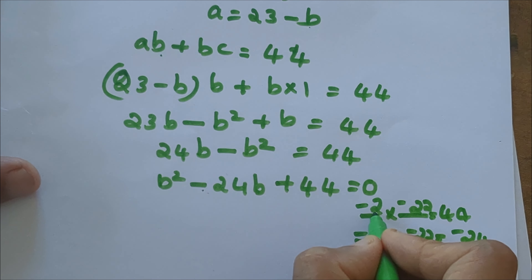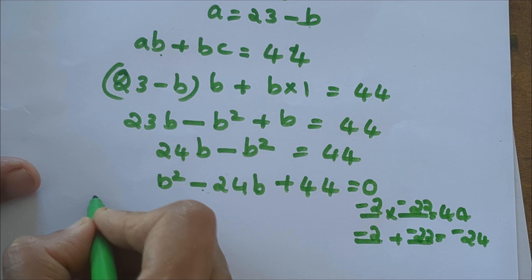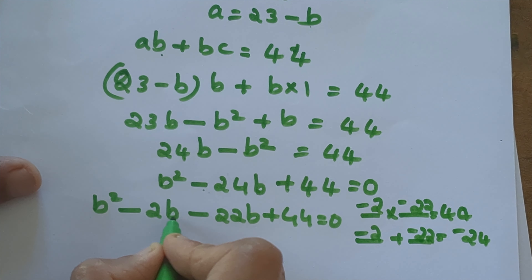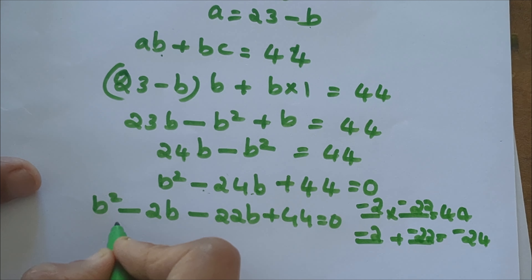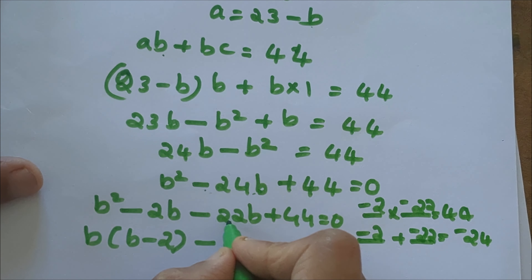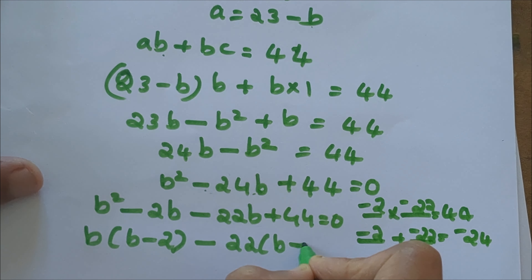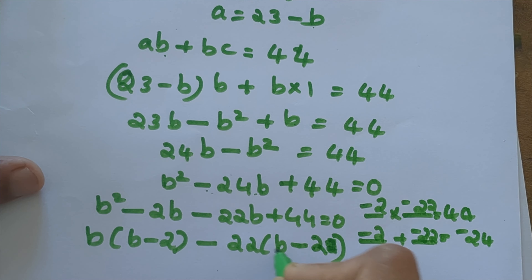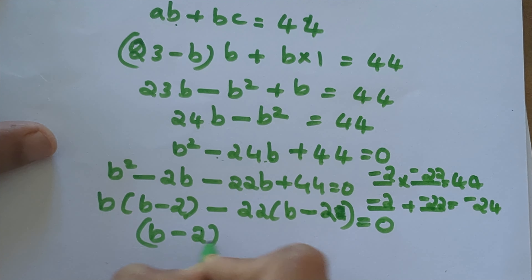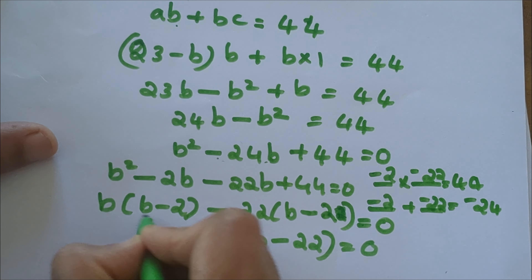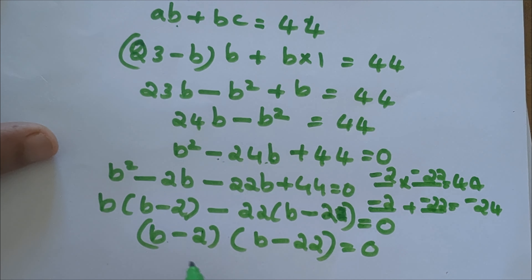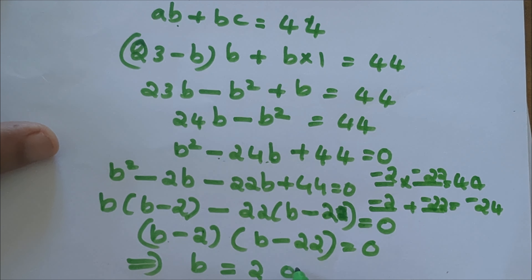The two numbers are minus 2 and minus 22, since minus 2 times minus 22 is 44 and minus 2 plus minus 22 is minus 24. So we split the middle term: b squared minus 2b minus 22b plus 44 equals 0. Taking b common from the first two terms and 22 common from the last two: b(b minus 2) minus 22(b minus 2) equals 0. So (b minus 2)(b minus 22) equals 0, which implies b equals 2 or b equals 22.